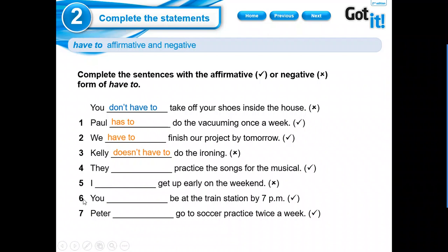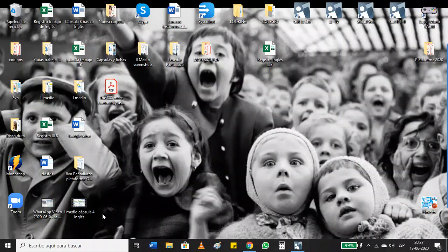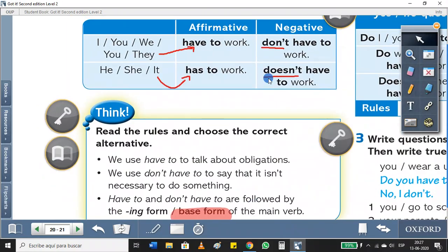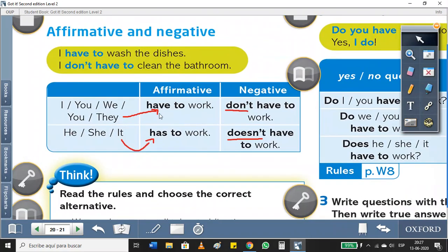Number six: You, affirmative sentence. You have to be at the train station by seven PM. And number seven, the last one: Peter, affirmative sentence. Peter has to go to circle practice twice a week. So that is not that difficult. So now we're going to study this again because this is the most important part of the lesson.